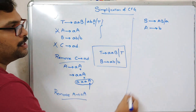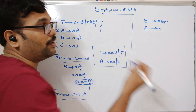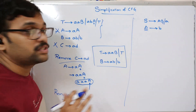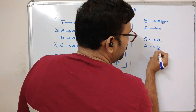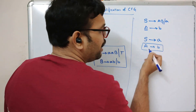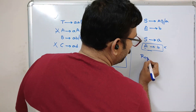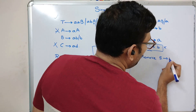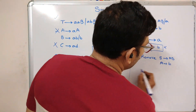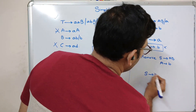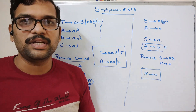Coming to the second example: we have a production for A, but what about the production for B? There is no production for B, so we can simply remove that. S tends to A, and A tends to B — this production is also useless because we don't have any production with non-terminal B. We need to remove S tends to AB because there is no production for B. If we remove that, there is also no production for A tends to B. So the simplified CFG is S tends to A — this is the only production we are going to use, and all remaining are useless productions.